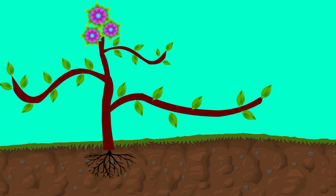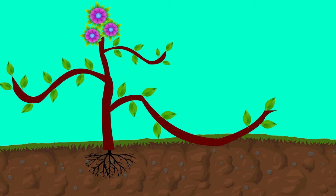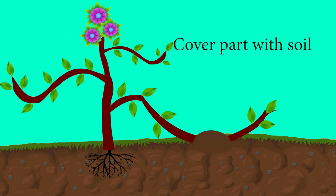Simple layering can be done by bending a low growing and flexible stem to the ground. Cover that part of it with soil, leaving the remaining 6 to 12 inches above the soil, so the covered part can form new roots.